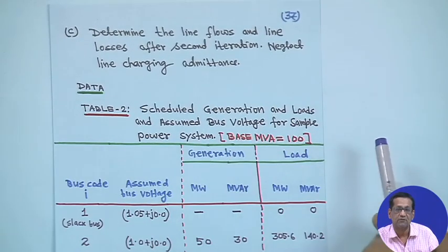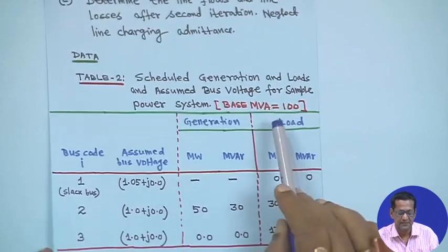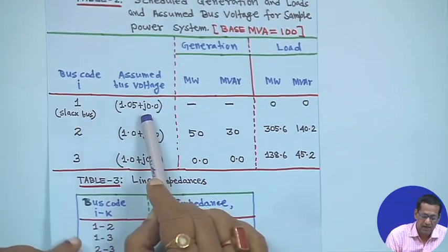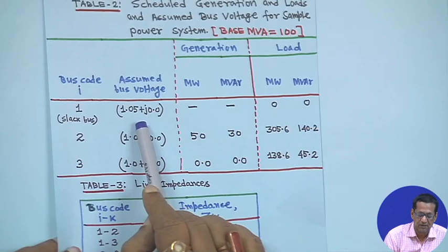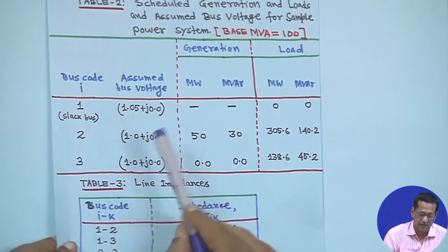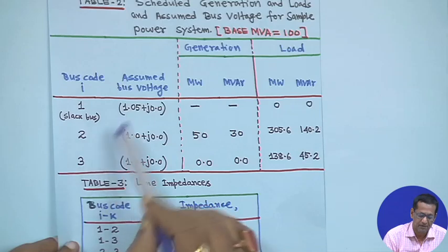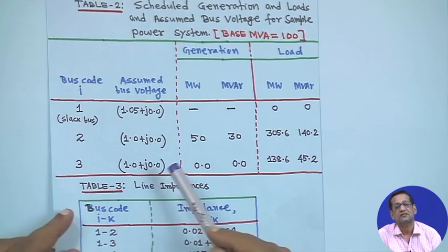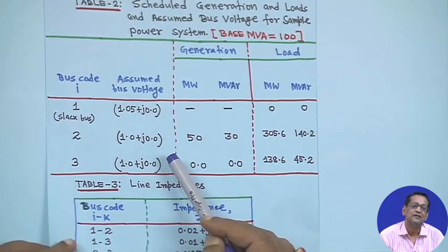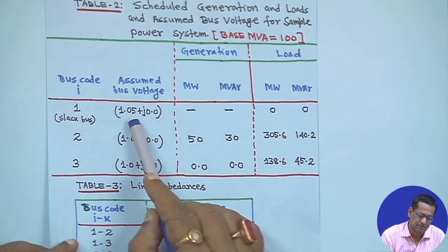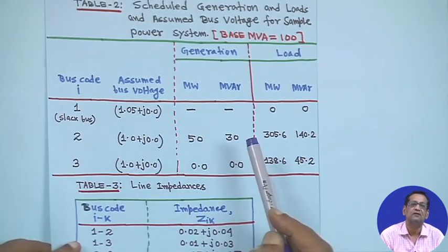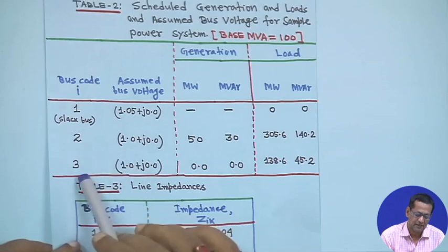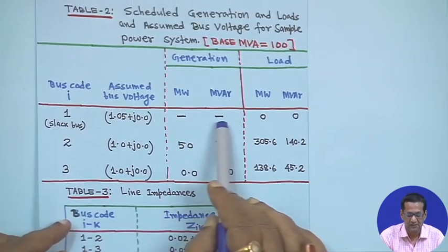Line charging admittance is not considered and the base MVA is 100. Bus 1 is the slack bus with voltage fixed at 1.05 + j0. The starting values for bus 2 and bus 3 are taken as 1 + j0. Although flat voltage start theory suggests that if the slack bus is 1.05, the other buses should also start at 1.05 + j0, here we use 1 + j0 as the initial values.